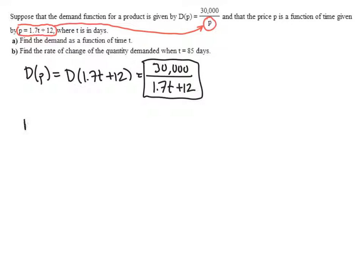So there's really two ways to do this, and it will be up to you to decide which way you prefer. Either way is going to give us the same answer. So first, method number one is to just start with the function that we have: D of t is 30,000 divided by 1.7t plus 12.